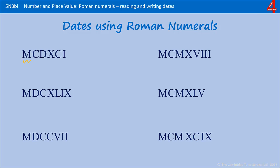The first one — we have 1000. Next there's 100, but that's followed by a D which is 500, so that's 400. Next we have a 10, but that is followed by 100, so that's 90. Add 1. The date is 1491 — the year Henry VIII was born.